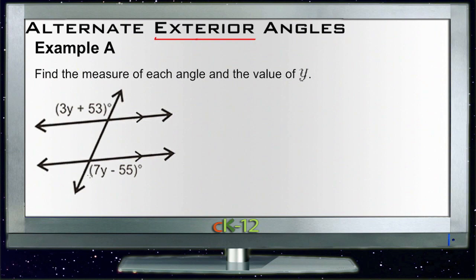We note that since these two angles out here—the one marked in the top left and the one marked in the bottom right—are alternate angles and they're on the exterior of these two lines which are specified as parallel, we know that those two angles must be equal.